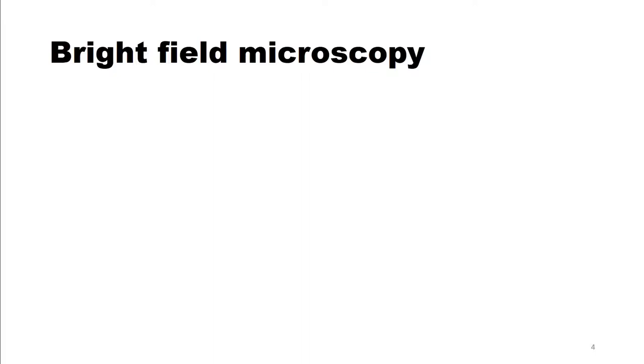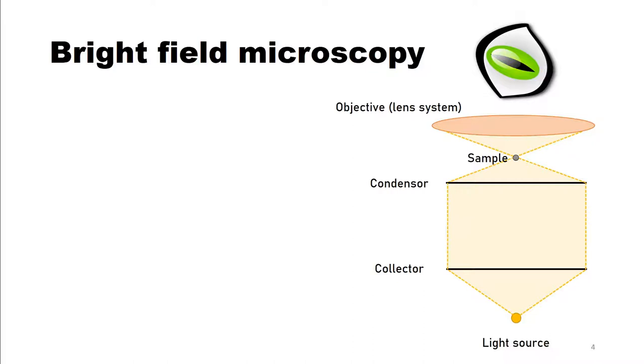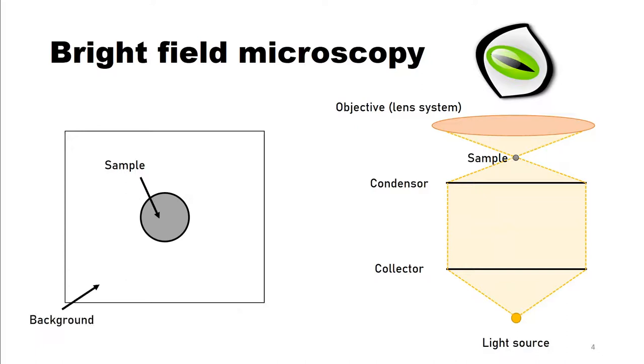The first and maybe most common setting you can choose is a bright field image. The sample is simply illuminated, absorbs light and appears dark, while the background does not interact with the light and appears bright.